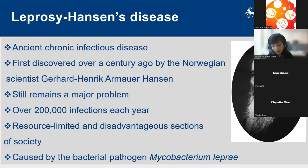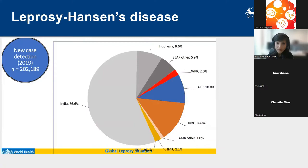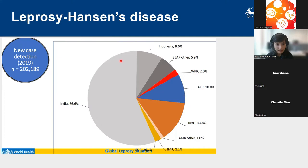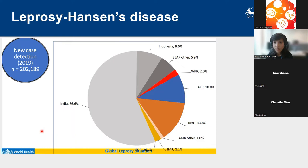Mycobacterium leprae, which is related to the tuberculosis pathogen Mycobacterium tuberculosis, is the bacterial cause of this infection. In 2019, the World Health Organization recorded about 202,000 new cases. This map shows the geographical distribution of newly detected cases, where India accounts for over 50% of the cases. Recently there have been reports of new infections and relapse infections, which are increasing in many parts of India.